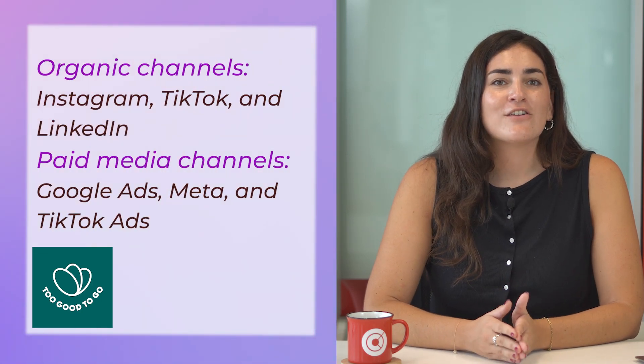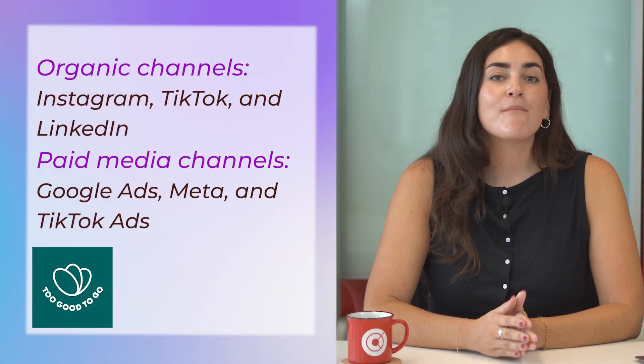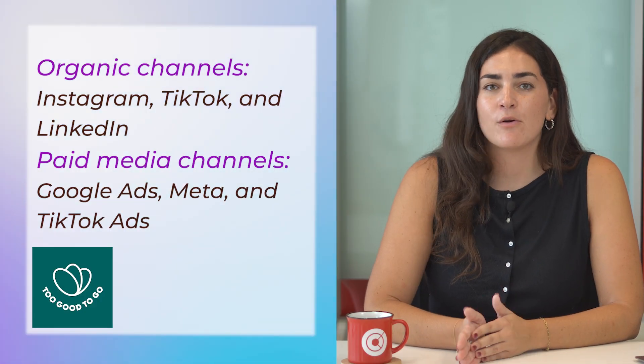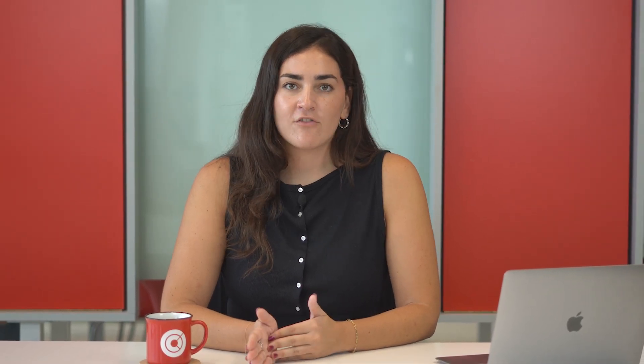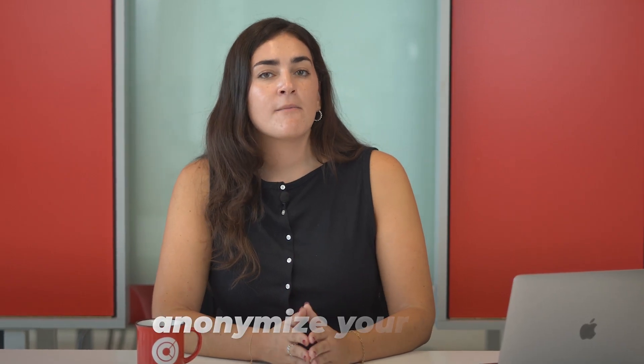Their organic channels include Instagram, TikTok, and LinkedIn, while they use Google Ads, Meta, and TikTok Ads for paid promotion. Their content focuses on sustainability, ingredient usage tips, and waste reduction recipes. You can either customize each section gradually or write the prompt from scratch. Important note: if you're using free AI accounts like ChatGPT, DeepSeek, etc., consider anonymizing your data.